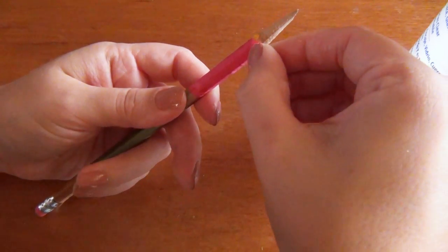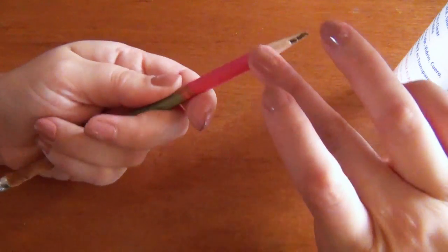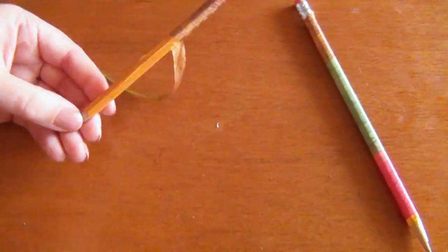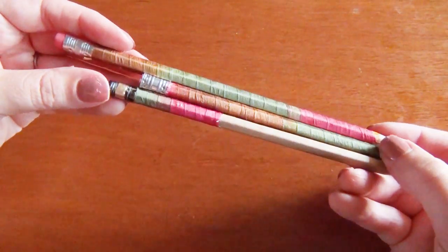Then cut it diagonally when you get to the bottom of the pencil and smooth it around with one last bit of glue. I fully wrapped two pencils and partially wrapped one.